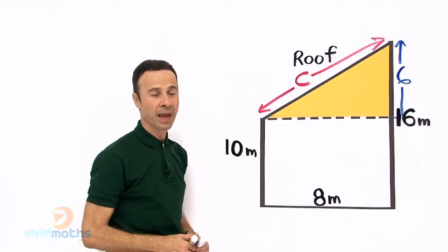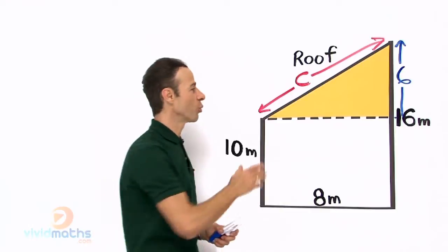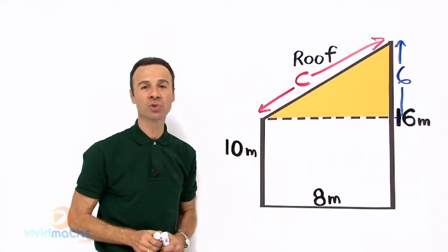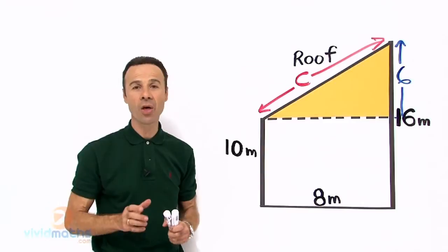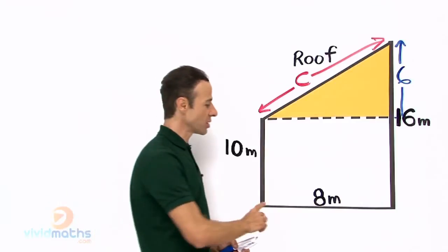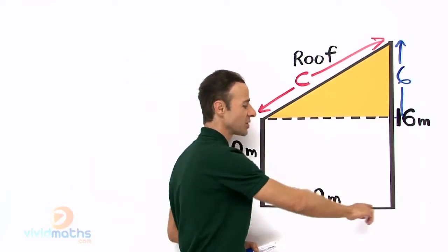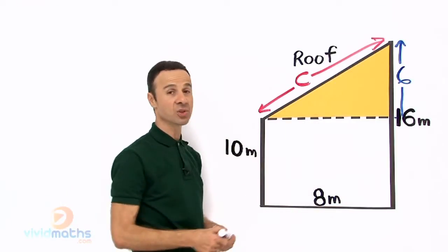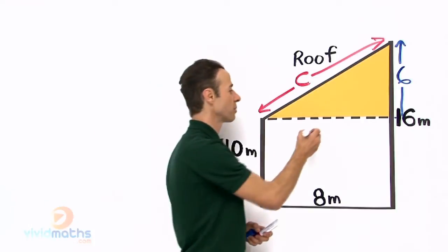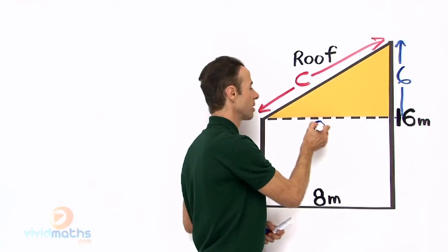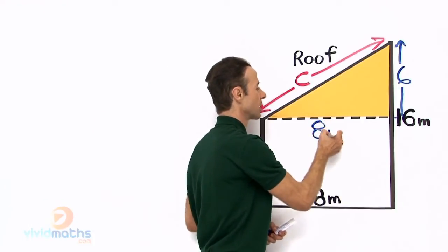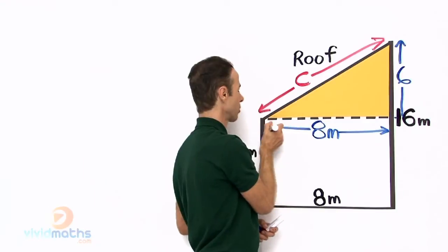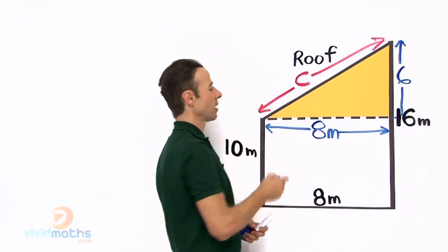Now how do we find the width between the two walls? Well, thankfully they have given it to us in the question — as you can see down the bottom it says 8m. So if that is 8m, we come up here and this is also 8m. Let us put that in there — that is 8m from there all the way across to there.